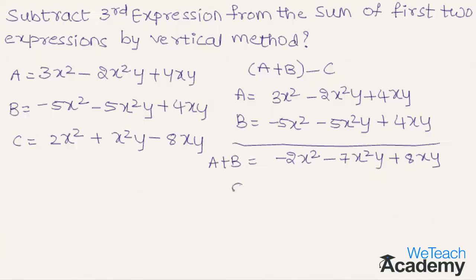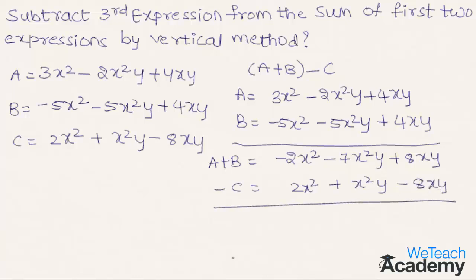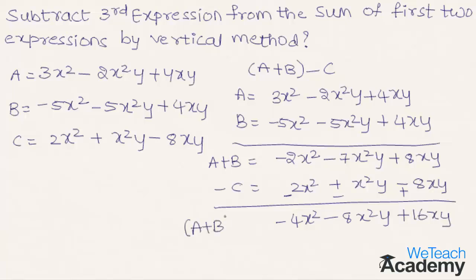Now let us subtract expression c, which is 2x² plus x²y minus 8xy. The additive inverse of plus 2x² is minus 2x², the additive inverse of plus x²y is minus x²y, and the additive inverse of minus 8xy is plus 8xy. So minus 2x² minus 2x² is minus 4x², minus 7x²y minus x²y is minus 8x²y, and 8xy plus 8xy is plus 16xy. Therefore a plus b minus c equals minus 4x² minus 8x²y plus 16xy.